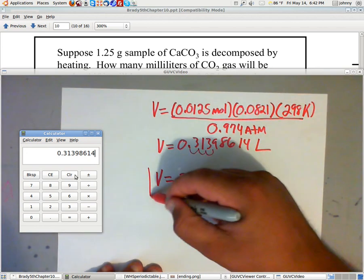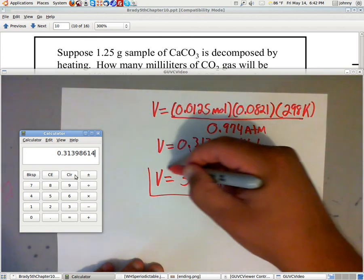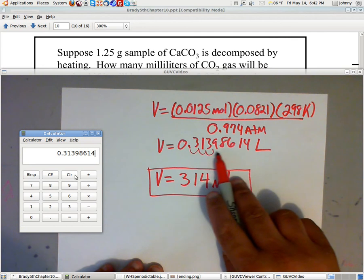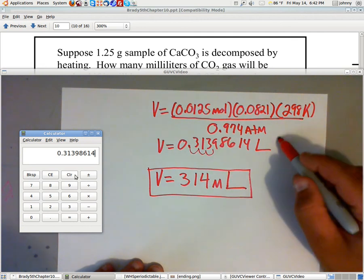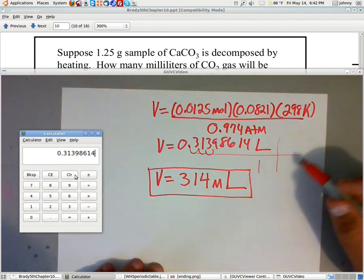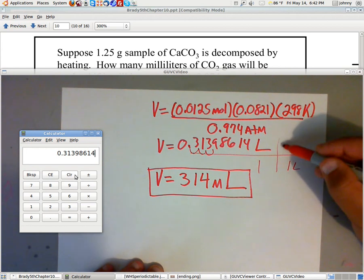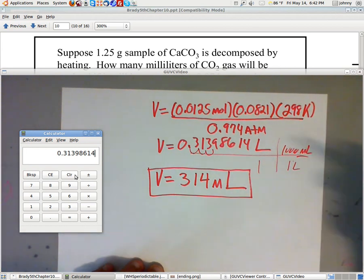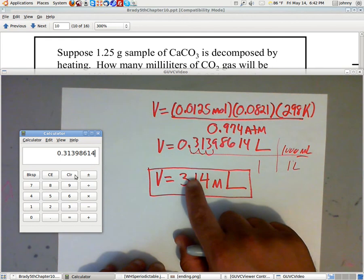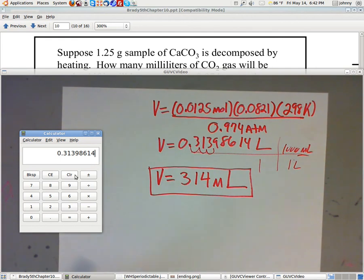Alright guys, I hope the video was helpful. You can just set this up and do dimensional analysis like this. Put this over one and say in one liter there's a thousand milliliters. But remember, you need three sig figs. So, 314 is our answer.